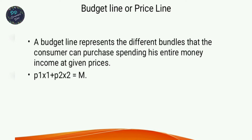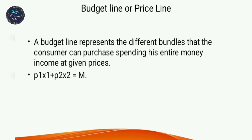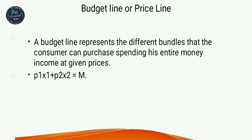The budget line shows two goods within the consumer's income in different bundles. As one good's quantity increases, the other decreases. With price of good one equal to 4 and price of good two equal to 2, the combinations along the budget line are: (0,10), (1,8), (2,6), (3,4) — these different combinations form the budget line.